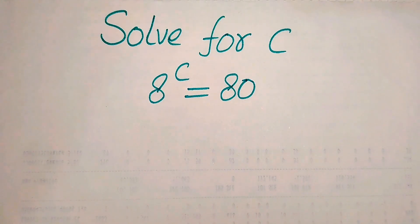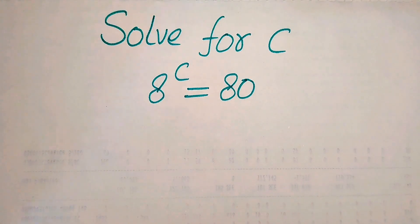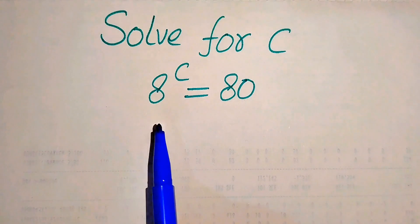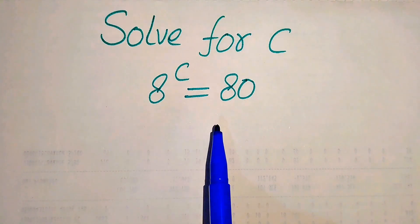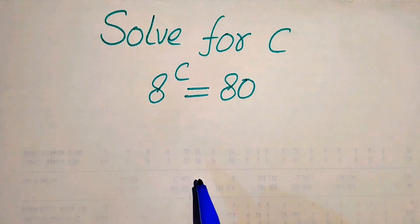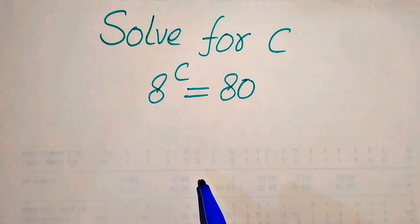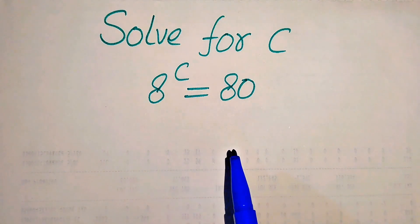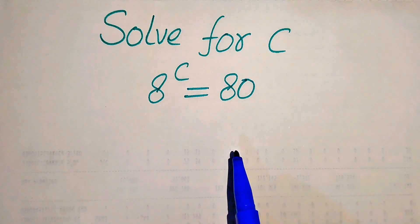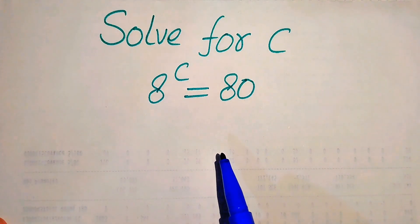Hello everyone. How to solve this problem for the values of C, if we have 8 to the power of C equals 80. We need to solve this problem for the value of C. Here we see that this is an exponential equation and we find the value of C.